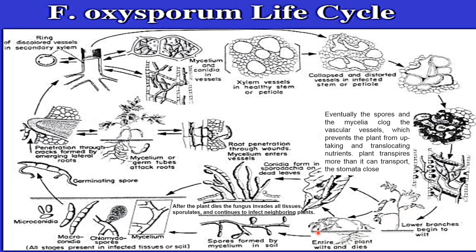Later on, the entire plant wilts and dies. After the plant dies, the fungus invades all the tissue, sporulates, and continues to infect neighboring plants. This is how the Fusarium oxysporum life cycle proceeds in the case of a diseased plant.